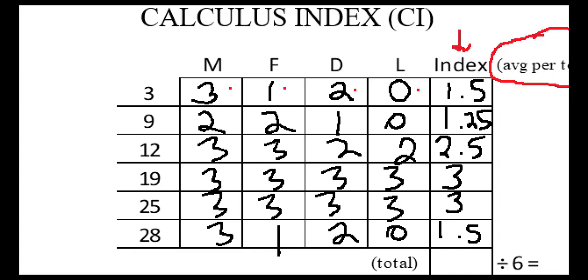The next step is to determine an overall average. So we need to total up all of these numbers and then put the total in this box. And then our next step is to divide that number by six to get our total calculus index.